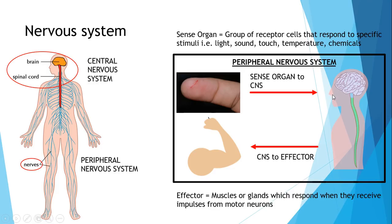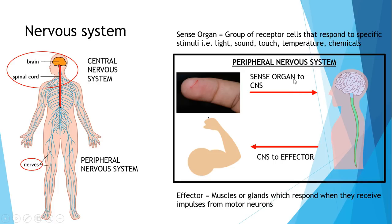And from the central nervous system, there's also a different set of neurons that send impulses from the CNS — basically from the brain — all the way to what we call an effector. An effector is basically a set of muscles or glands which respond when they receive impulses from motor neurons. In this scenario, your brain tells your arm or finger muscles to scrunch up the paper and throw it into the bin. These neurons that connect everything together are all part of the peripheral nervous system, which is what connects everything to the brain.